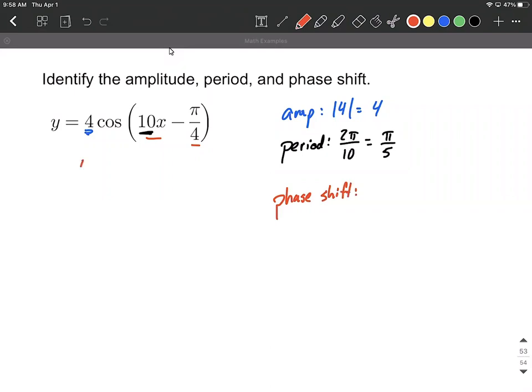If we factor this, we can rewrite this as 4 times the cosine of, I'm going to factor out a 10 between both these terms on the inside of our function. So if I remove that 10, I'm going to have an x there. But then next to that, we want 10 times some number, I'm going to call it C, equal to pi over 4. So we'll divide both sides by 10, and our value that's going to go on the inside is pi over 40, so minus pi over 40.